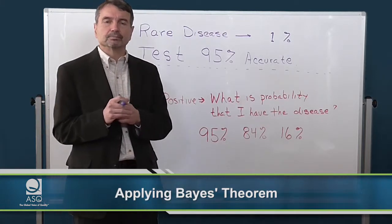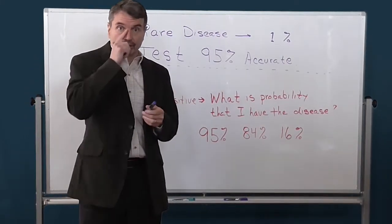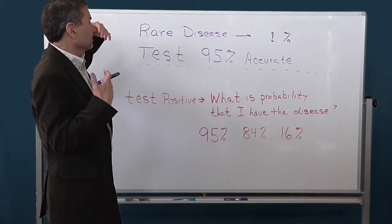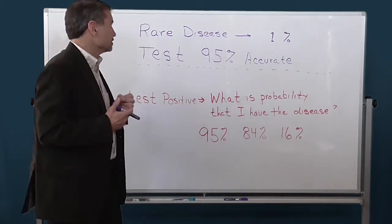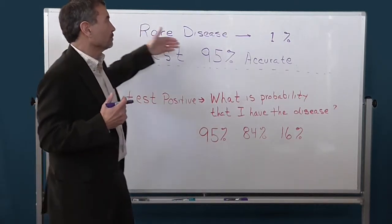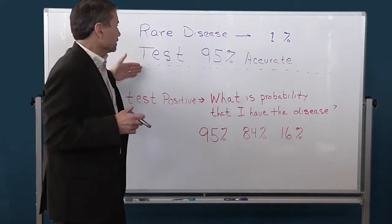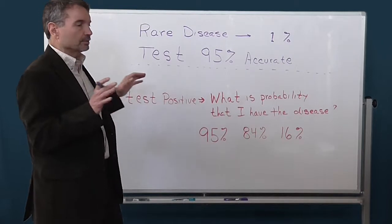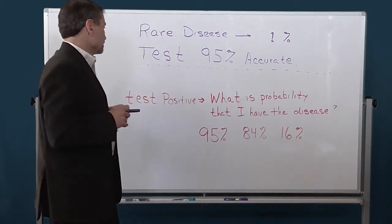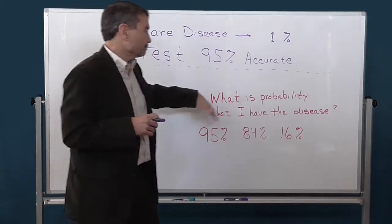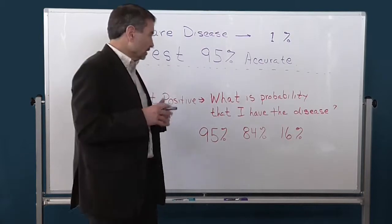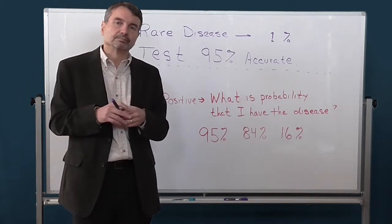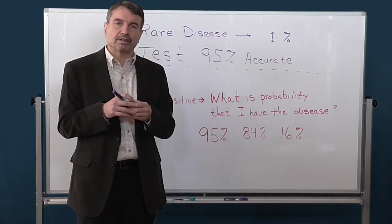Let's walk through an actual demonstration from the medical field. This was an example written up in the New England Journal of Medicine back in the 1970s. Let's say you walk in for a test for a particular disease, and the disease is extremely rare — it affects only one percent of the population — and the testing for it is 95% accurate. The question posed to 65 doctors back in the 1970s was: if I test positive, what is the probability that I have the disease? Options were 95%, 84%, or 16%.